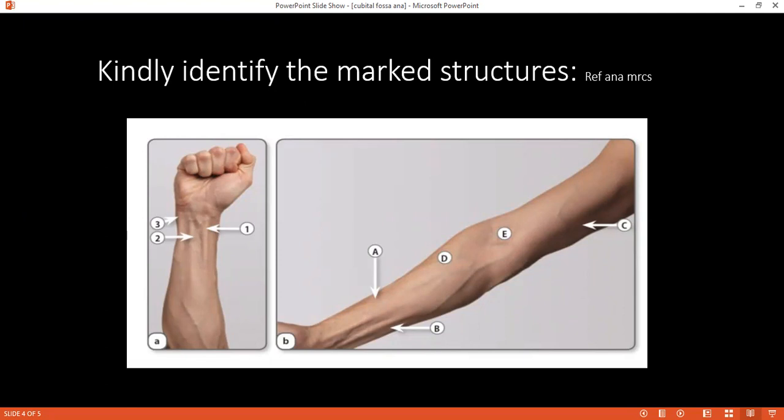What would be the deformity with which patient will present if there is ulnar nerve damage at elbow? Patient will present with partial ulnar claw hand involving fourth and fifth digits. And the clawing is less prominent as compared to the distal injury. Good. Okay.